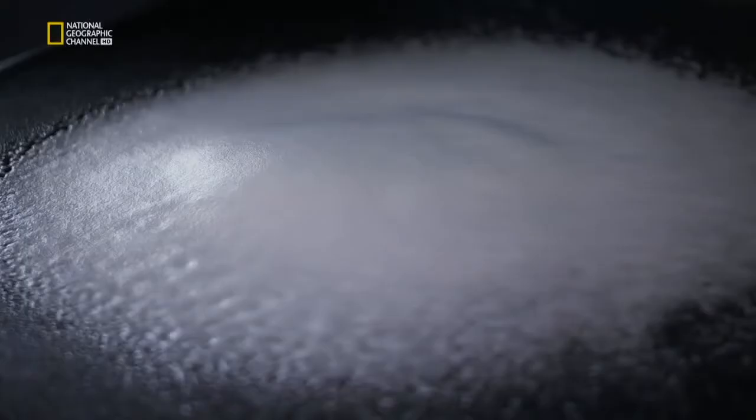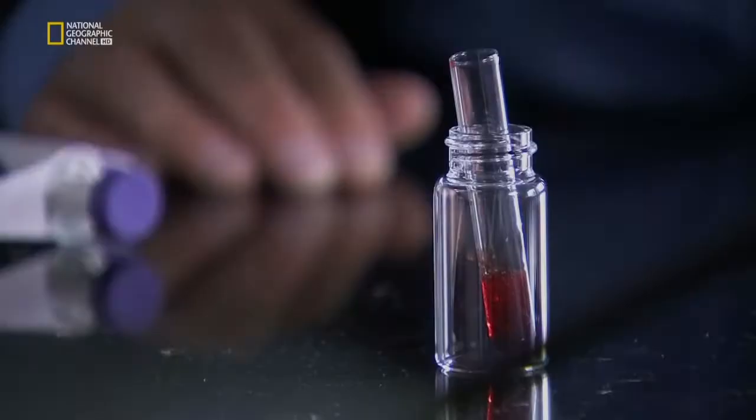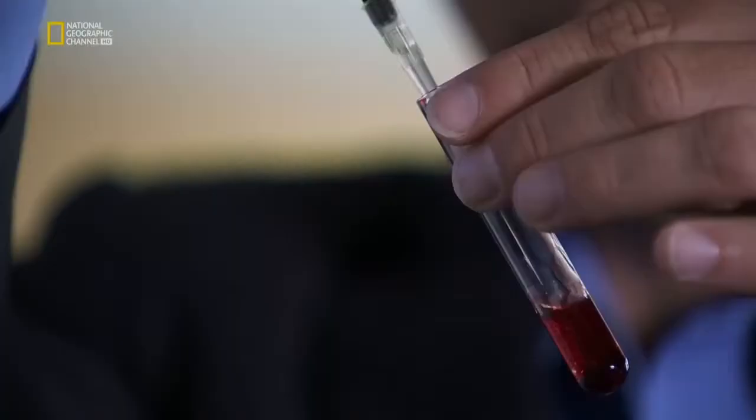But getting the bandage on is only half the battle. Matt's figured out an ingenious way to get it off. Now, when you get a patient to the hospital and they have the Hemagrip all over their wound, the trauma surgeon is going to want to be able to remove that quickly and easily so they can identify the injuries and perform surgeries unimpeded. So we're going to actually have you add this reagent into the gel, and then just give it a little mix.